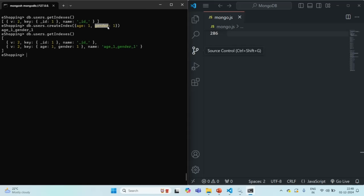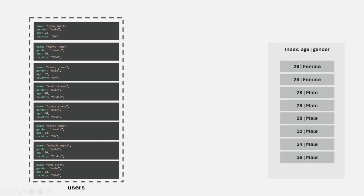For example, the index will look something like this. First it is sorted by age — you can see 26, 28, 32, 34, 36, and so on. And after that, it is also sorted by gender. But if we change the order, if we create an index where we first specify gender in ascending order and then age in ascending order, then the index will be sorted first by gender and then by age, as you can see here. So the order does matter.